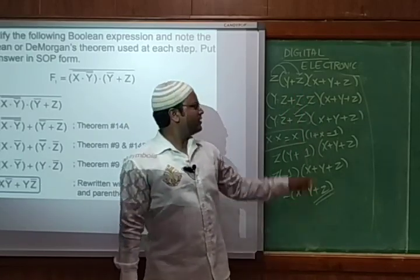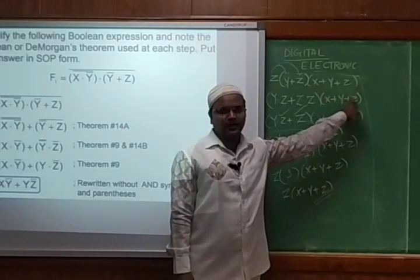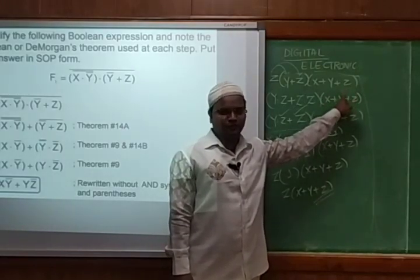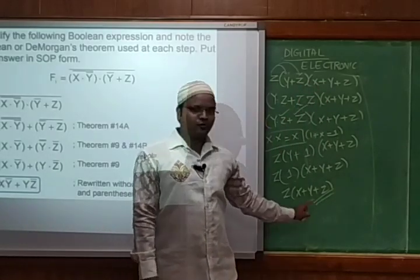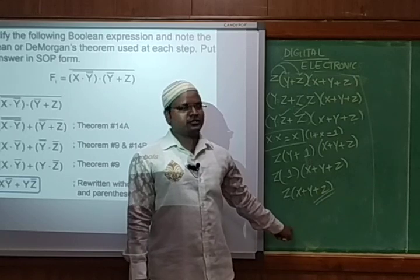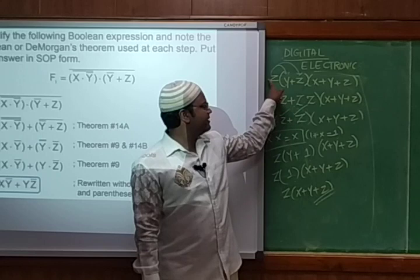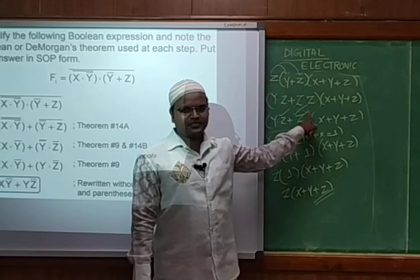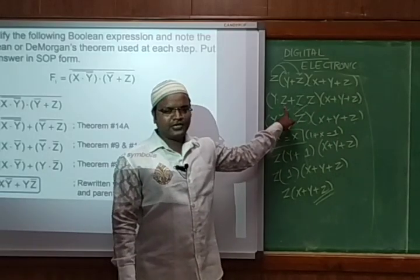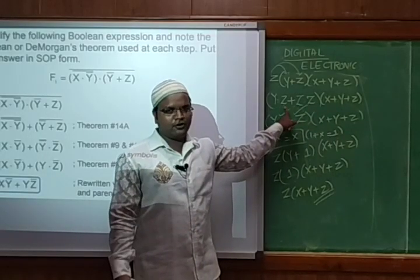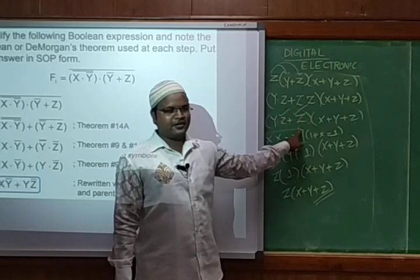Here is an important question. They gave you z(y + z)(x + y + z) and asked to convert it into SOP form. This is in POS form — product of sum — and we want to convert it into SOP. To do that, we multiply z with both terms, giving us y·z and z·z, as well as x + y + z. Now z·z simplifies to z by applying the Boolean law.